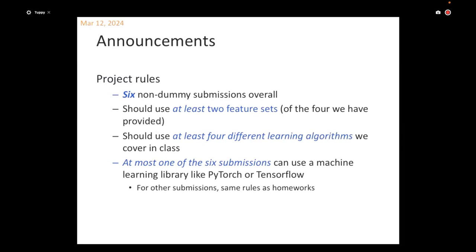You need to use at least four different algorithms that we covered in class. We've already covered at least two: we've done Perceptron and decision trees. We'll be looking at support vector machines, logistic regression, boosting, and other ensemble methods. You don't necessarily need to implement them from scratch — if you know how to use libraries, you can use them.